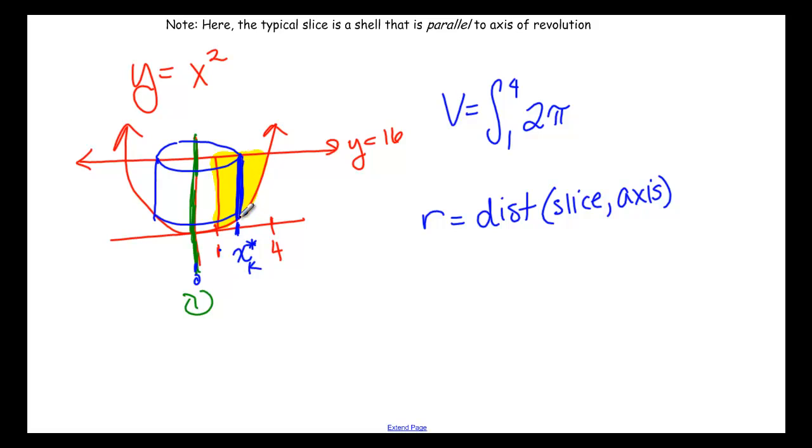And our slice here then is at x, and our axis over here is at 0. So in this example our radius is going to be x minus 0.